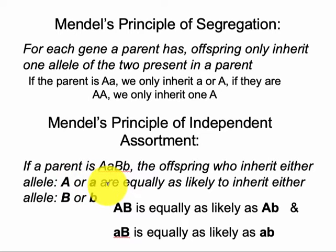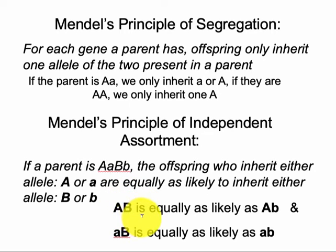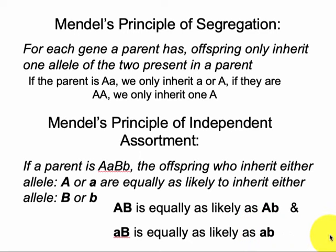But how they combine — this is what the principle of independent assortment addresses. Inheriting the dominant allele for gene A with the dominant allele for gene B is just as likely as getting the dominant allele for A with the recessive for B, or the recessive allele for A with the dominant allele for B, or both recessive alleles. Any of these combinations is equally likely. Whether you get the dominant or recessive allele for gene A does not determine which allele you will inherit for gene B — the inheritance of gene A does not affect the inheritance of gene B.